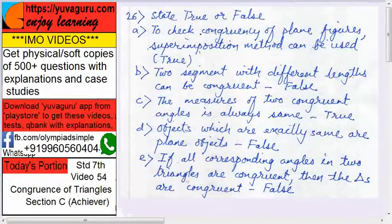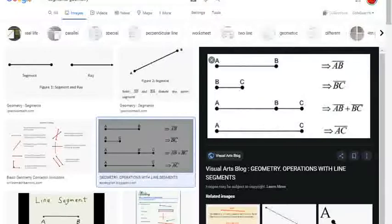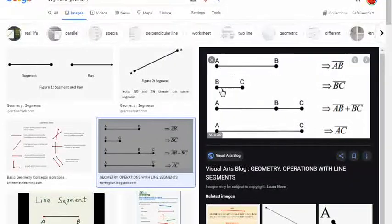Next, two segments with different lengths can be congruent - that is false. Say this, AB and BC, these are two segments. Are they congruent? Different lengths, not congruent.